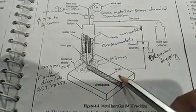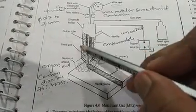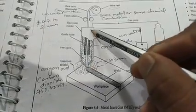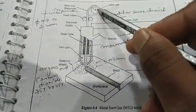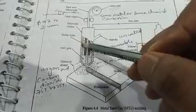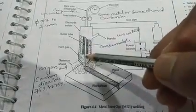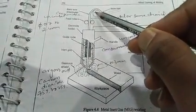Now see the construction. These are the workpieces which are to be welded, and this is the torch in which the electrode is supplied in form of small wire.